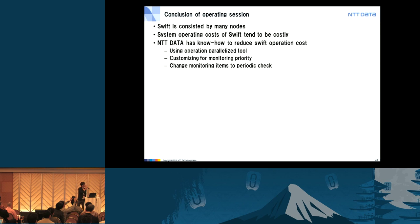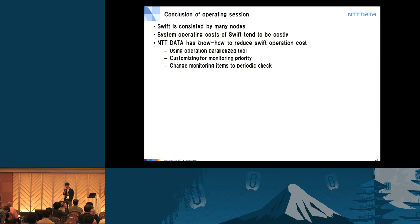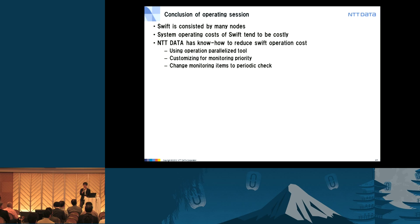In conclusion for the operating session: Swift consists of many nodes and system operating costs tend to be high. NTT Data has know-how to reduce Swift operation costs using parallelized operation tools, customizing monitoring priority, and changing monitoring items to periodic checks. Docomo Mail service uses NTT Data Swift Solutions with customization. NTT Docomo achieved a 60% to 70% reduction in TCO — total cost of ownership — over five years.